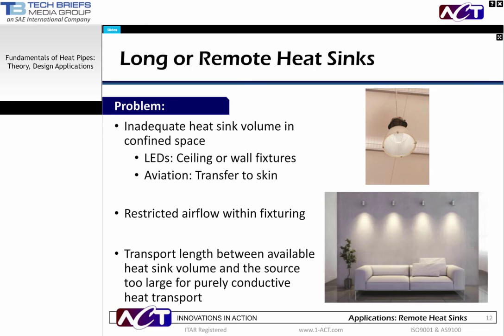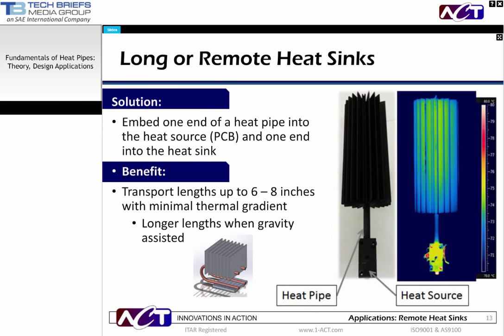In many lighting applications, the LED device must fit in a fixed space to accommodate a variety of customer requirements which usually exclude thermal management considerations. A common example is a luminaire design where ceiling or wall fixtures are based on a pre-existing design using non-LED technologies. These designs commonly have both restricted space for heat dissipation through conduction and limited airflow to remove heat via convection. In cases where there is space to remotely dissipate the heat, heat pipes can be used to transport the heat from the device to a heat sink located elsewhere — this is called the remote sink.